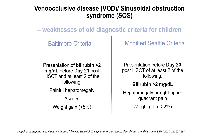Veno-occlusive liver disease, or in other words sinusoidal obstruction syndrome, is a very challenging diagnosis. You can see here clearly the weaknesses of old diagnostic criteria for children. For the diagnosis of VOD using Baltimore criteria, you needed a presentation of bilirubin more than 2 mg per deciliter before day 21 post-transplant, and at least two of the following: painful hepatomegaly, ascites, or weight gain more than 5% from baseline.